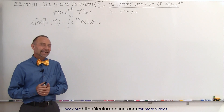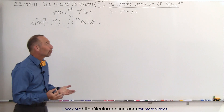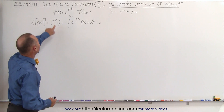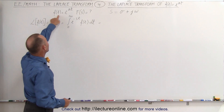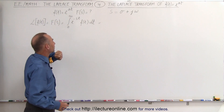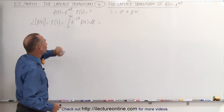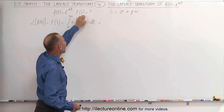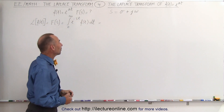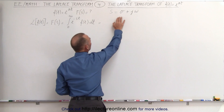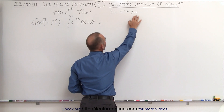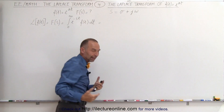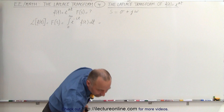Welcome to iLectro Online. In this video, we're going to find the Laplace transform of the function f of t equals e to the at. We're going to convert it from the time domain to the complex frequency domain, remembering that s equals sigma plus j omega. Remember that j is the square root of negative 1, which makes that a complex number.